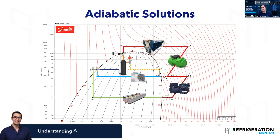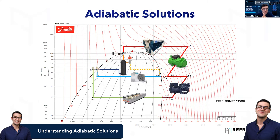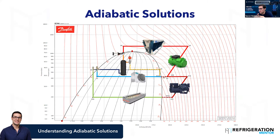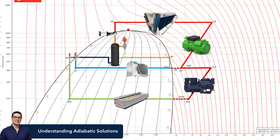So the adiabatic solution — what is it? We have this really nice enthalpy diagram here. It's a chart from Dan Foth, CoolSelector 2. I talk about it all the time — you should be using that software because it's great. We have the transcritical cycle on here, with the transcritical medium temp compressors going into the gas cooler condenser.